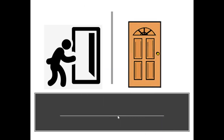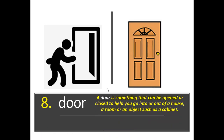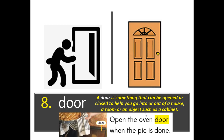Next pair of pictures. What do you notice or see, and how are these pictures the same or similar? I noticed that this person's going through a door and I see a front door here, so they both have doors in common. Door is the word. A door is something that can be opened or closed to help you go into or out of a house, a room, or an object such as a cabinet door. Example: Open the oven door when the pie is done. Please open the door for me. Who will come through your front door at your house or home?